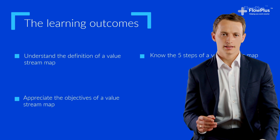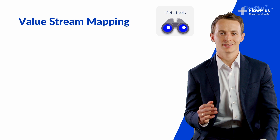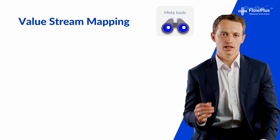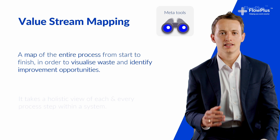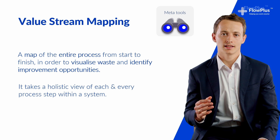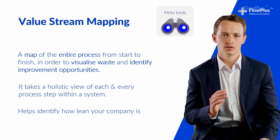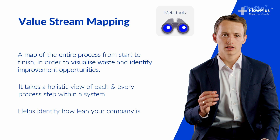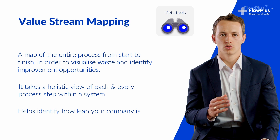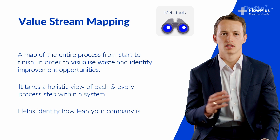Value stream mapping is an extremely powerful meta tool for identifying exactly where to start your lean journey. It provides a holistic view of each step of your entire system and allows you to understand how you currently work and where you are on the lean scale. Value stream mapping objectively maps the sequence of activities required to create customer value and bring a product or service to the customer.